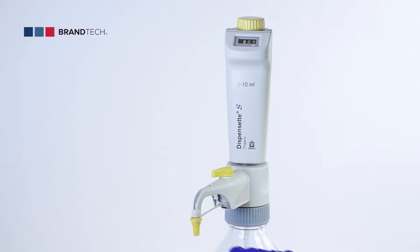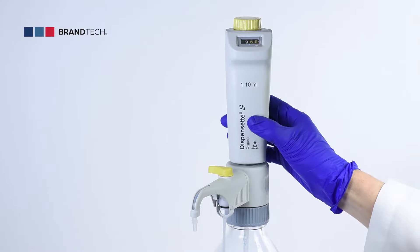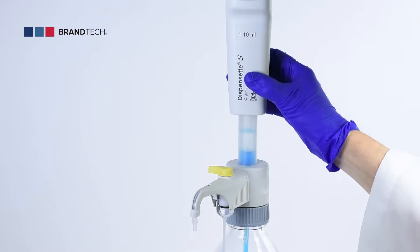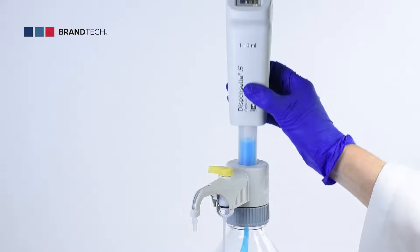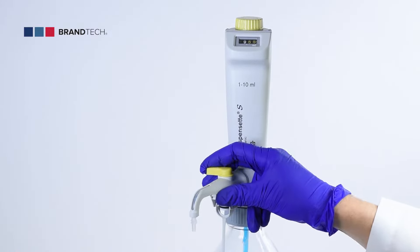To prime your Dispenset S, unscrew the screw cap of the dispensing tube and rotate the recirculation valve to the recirculate position. Gently pull up on the piston and push down to the lower stop. Repeat this process at least 5 times.